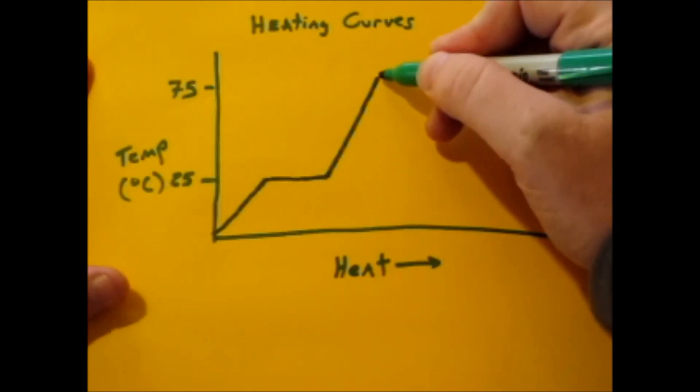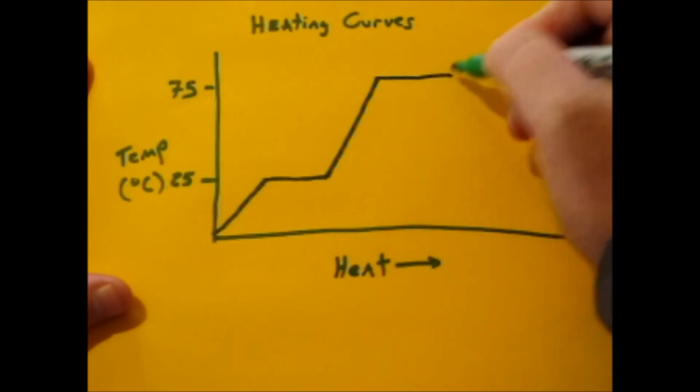Then it's going to hit another temperature where it stops changing, and it's going to be boiling. After it boils, you're going to have a gas, so it's five segments to a heating curve.